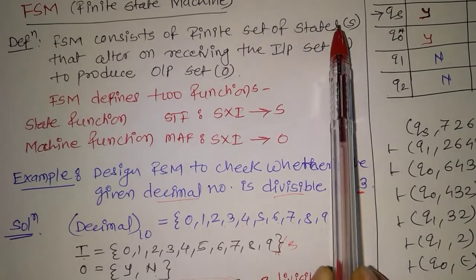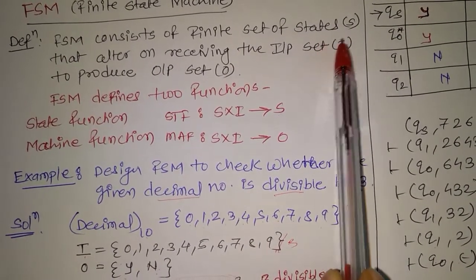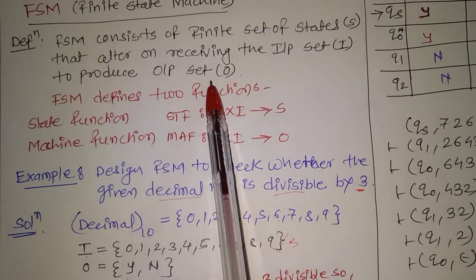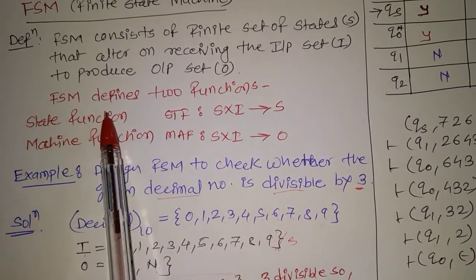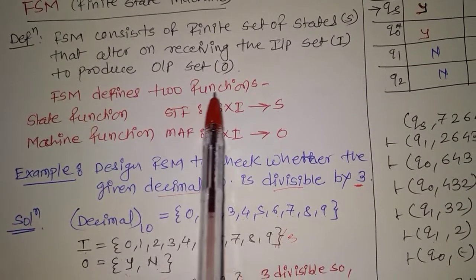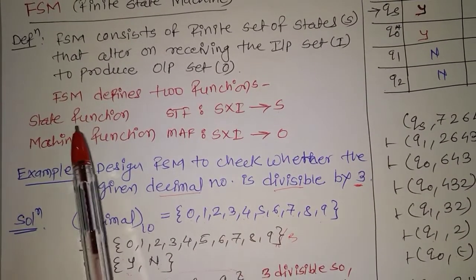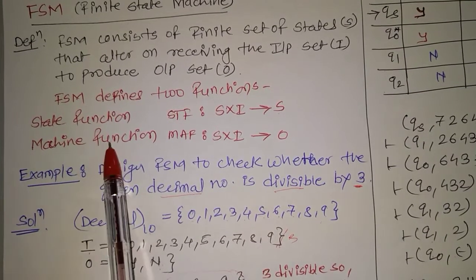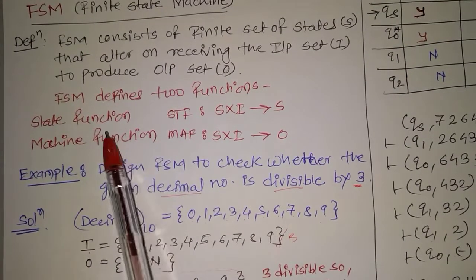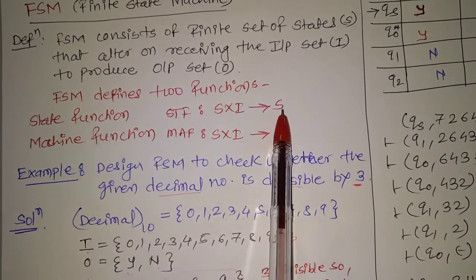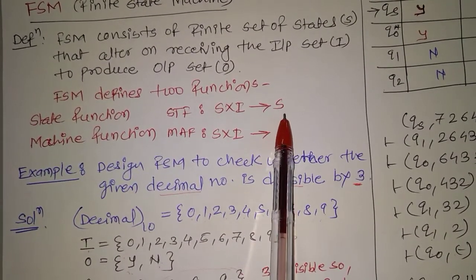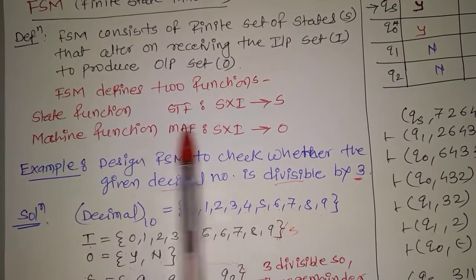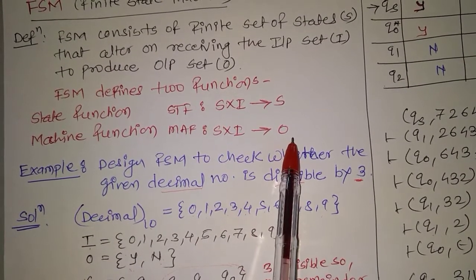So there are basically three sets: state set S, input set I, and output set O. FSM consists of two functions: the state function and the machine function. The state function produces only one state and the machine function produces only one output.